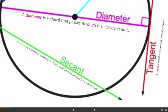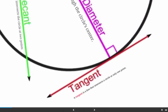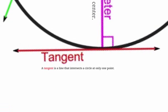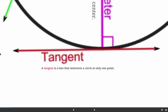The final line segment we're going to talk about is a tangent. A tangent is a line that touches a circle at exactly one point. It goes on forever in both directions and intersects the circle exactly once.